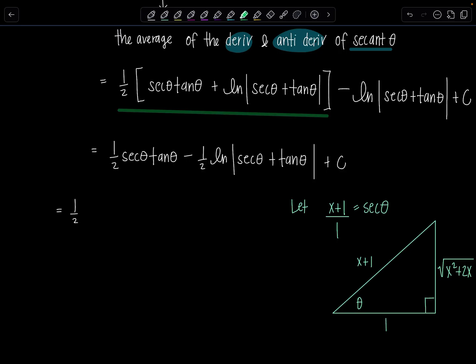So one half, this secant theta, I mean, I could look at the triangle or I could just say, oh, it's X plus one. Tan theta is going to be the ratio of opposite over adjacent side. So that's square root X squared plus two X minus one half LN. And then we have absolute value. I ran out of space. Please forgive of X plus one plus square root X squared plus two X. Close it up. Plus C. And voila, we are done.